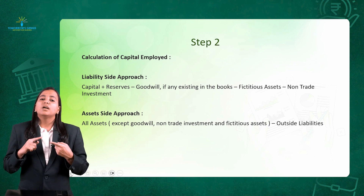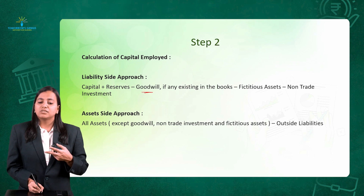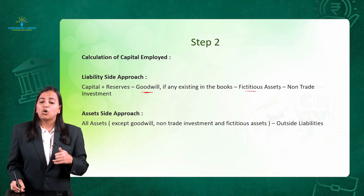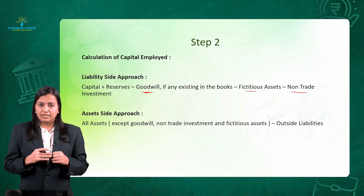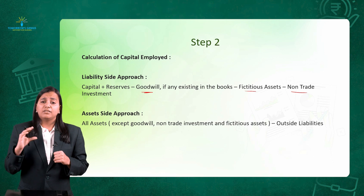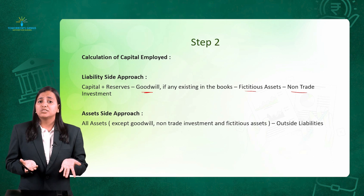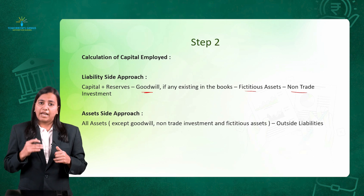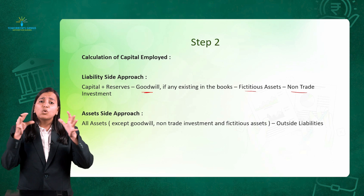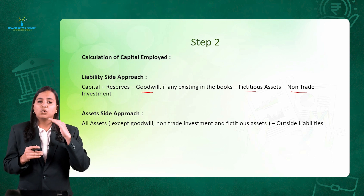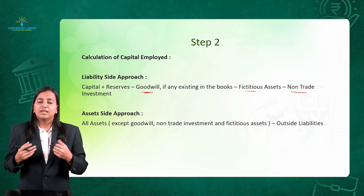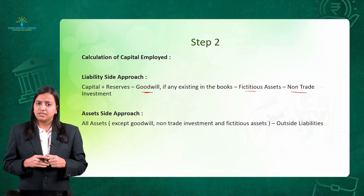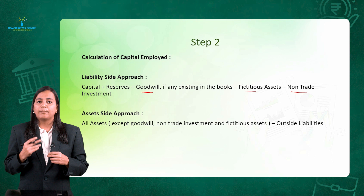Under the Liability Side Approach: Capital plus Reserves minus Goodwill (if existing), less any fictitious assets, less non-trade investments. Regarding non-trade investments — if the question says 'trade investment,' treat it as trade; otherwise, assume it to be non-trade investment. Under the Asset Side Approach: take the total of assets and deduct Goodwill, fictitious assets, non-trade investments, and outsiders' liabilities — for example, creditors, outstanding salary.